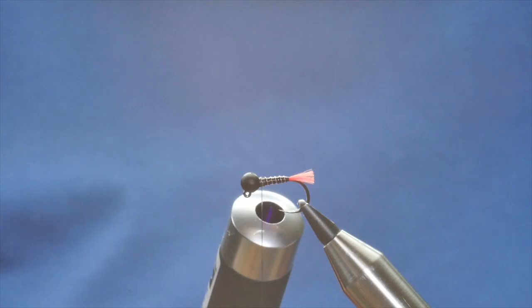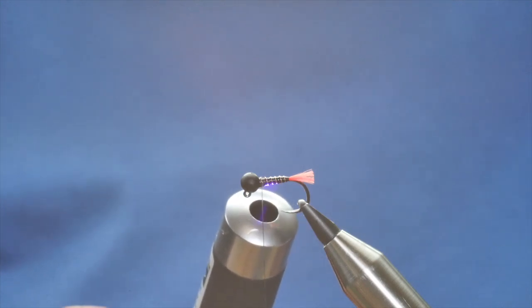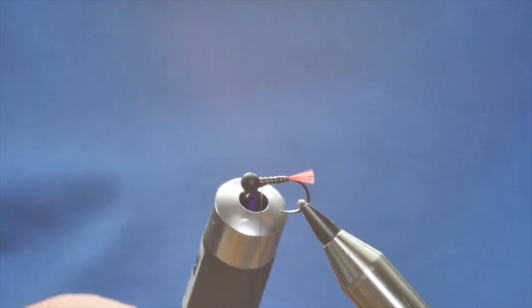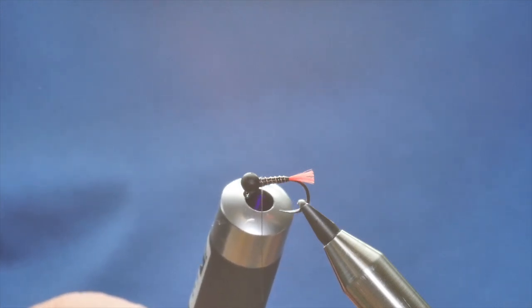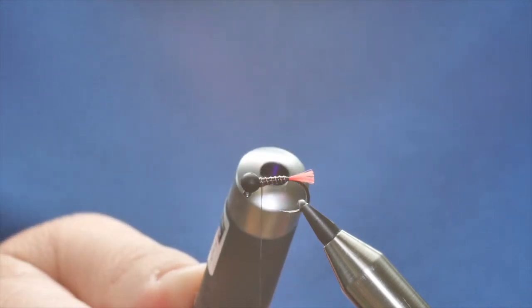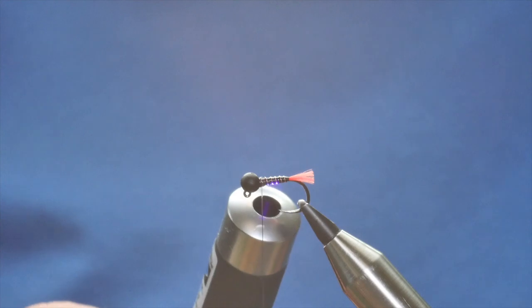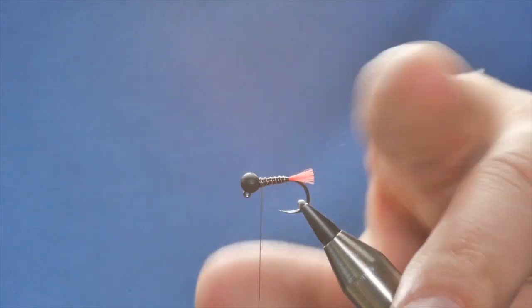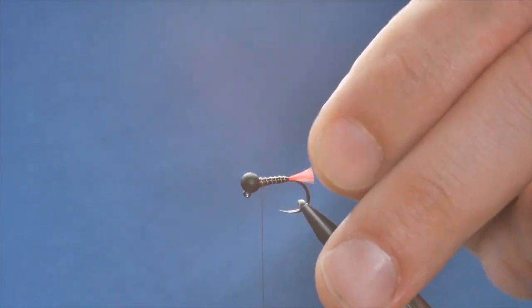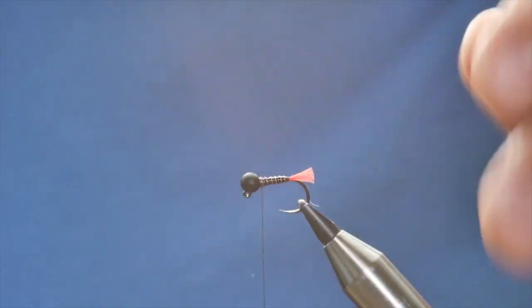Now I posted a picture on Facebook, I don't know, six weeks ago maybe, and I used a technique where I split the thread to create a wing with dubbing. So I'm going to do that here just to show you how that was done. The fly seemed quite popular, and although it was a fly for anglers rather than for fishing, I don't tie a lot of them, but I thought I would show you the technique because it's quite handy.